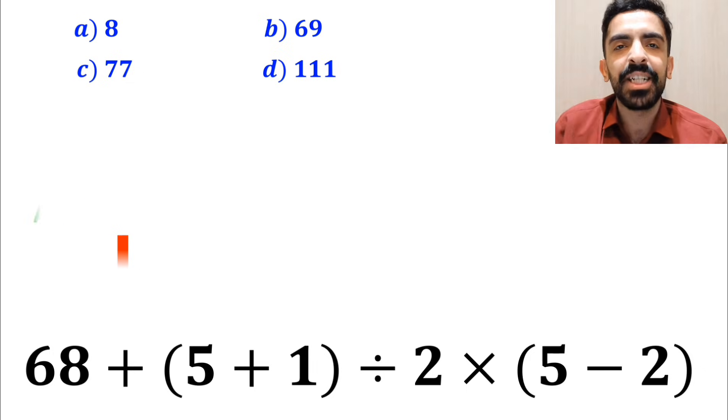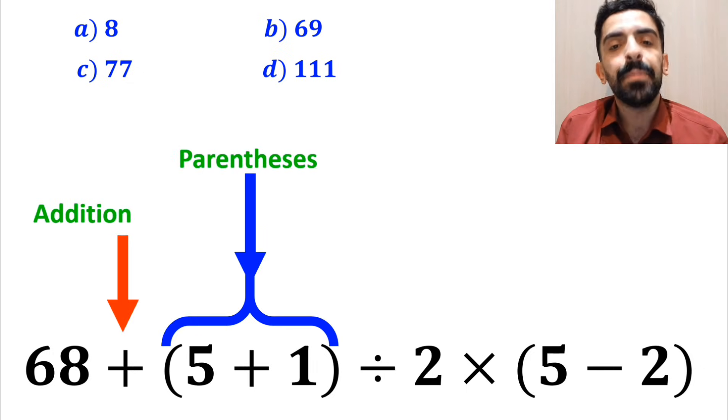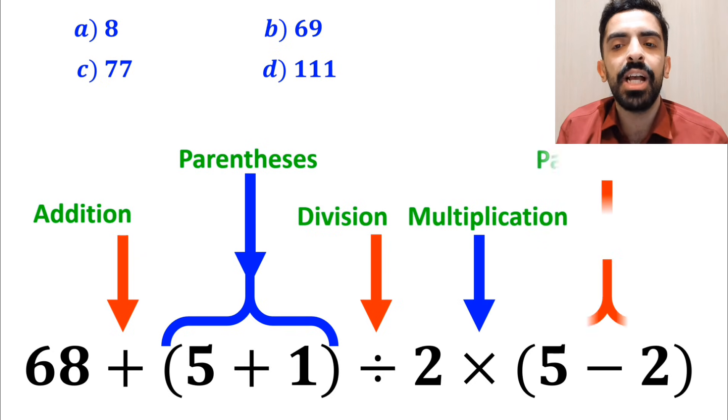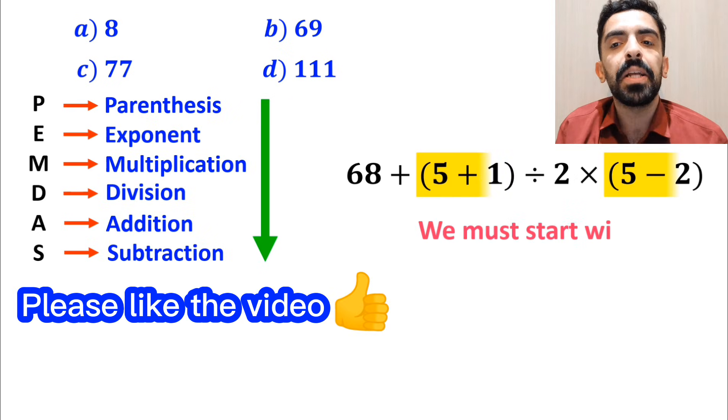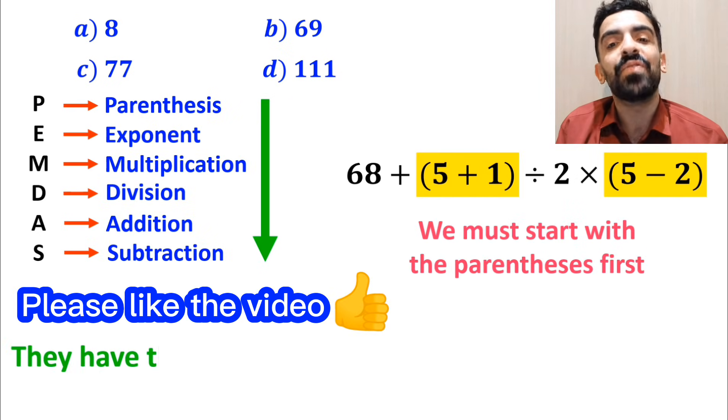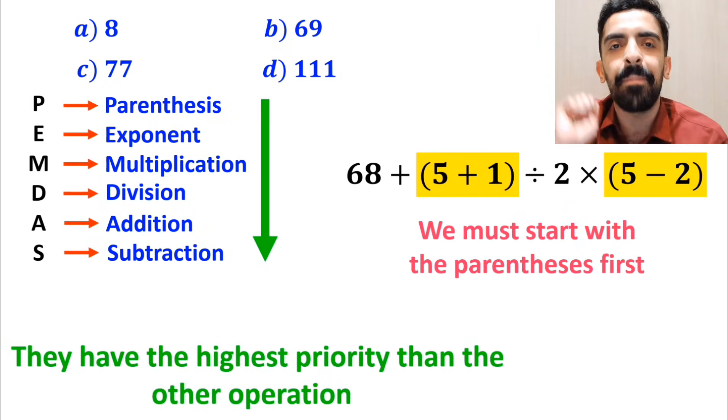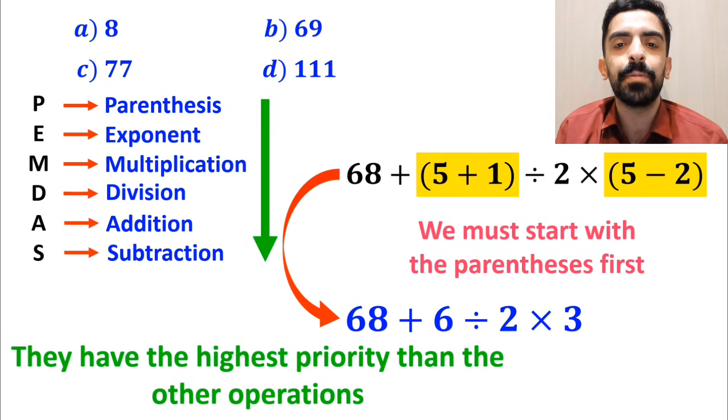As you can see in this expression, first we have an addition sign, then parenthesis, followed by a division sign, then multiplication, and finally another parenthesis. We must start with the parentheses first because they have the highest priority. So this expression simplifies to 68 + 6 ÷ 2 × 3.